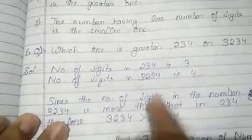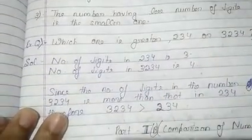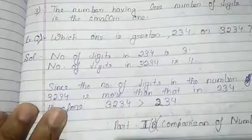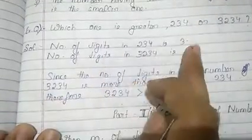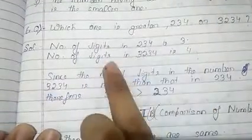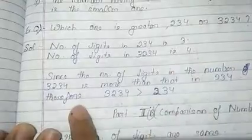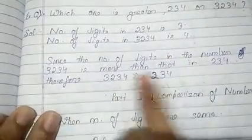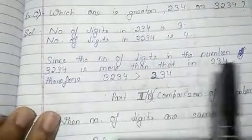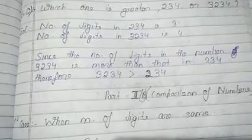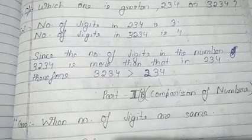Let's take an example: which one is greater, 234 or 3234? The number of digits in 234 is 3, and the number of digits in 3234 is 4. Since 3234 has more digits than 234, therefore 3234 is greater than 234.